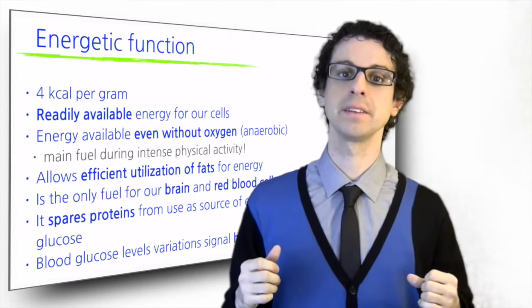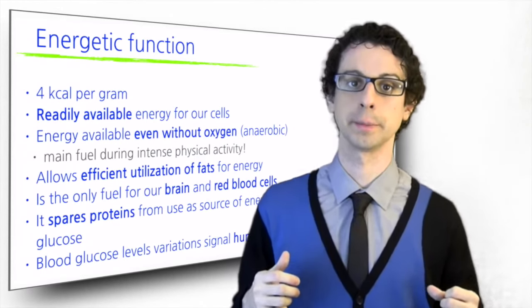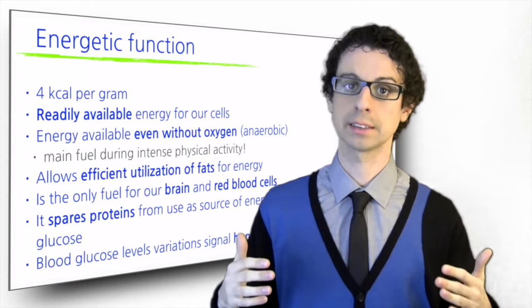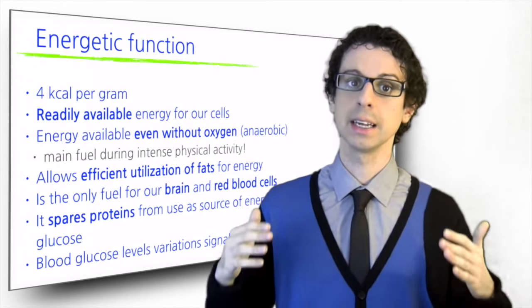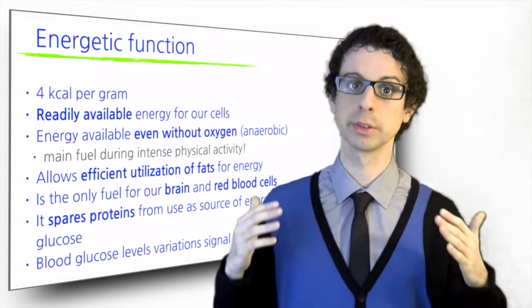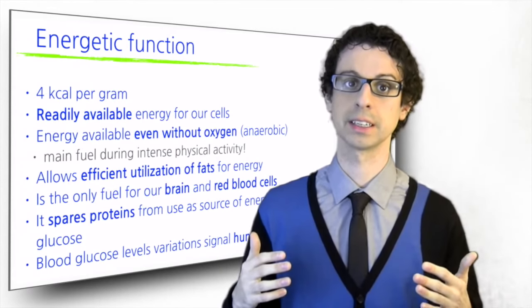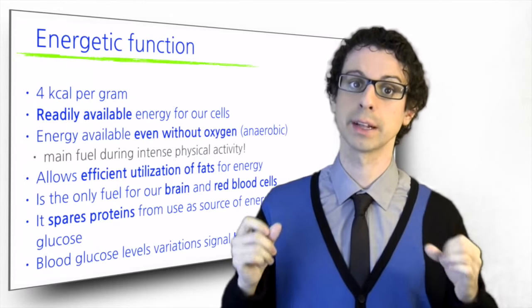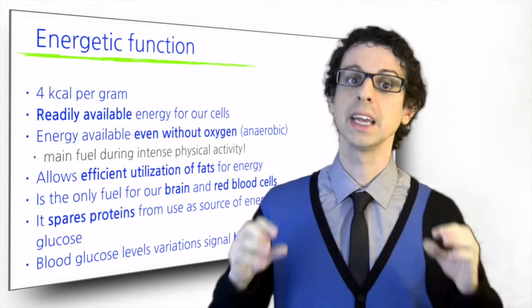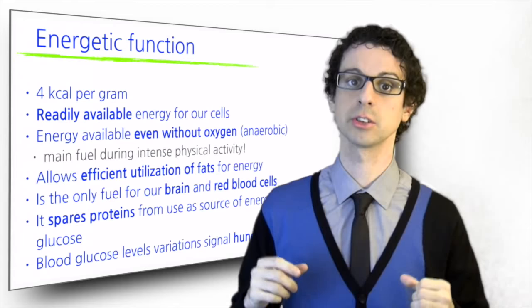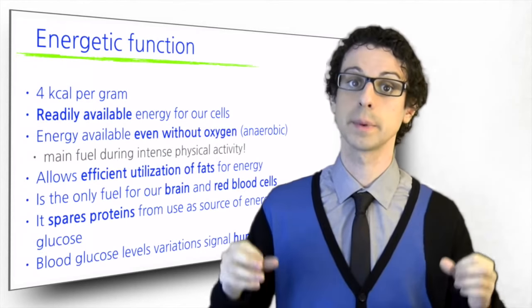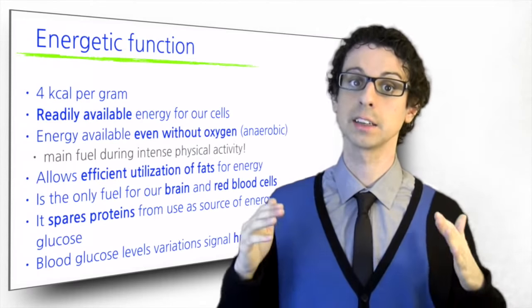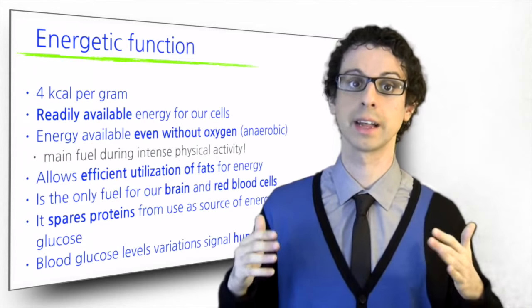So to recap, these are the main functions of glucose in our body. It provides readily available energy for our body at rest and during light activity. It is the only source of energy during intense anaerobic physical activity. It provides energy for our brain, nervous system and red blood cells at all times. It allows an efficient utilization of fats for energy. It spares proteins from use as source of energy and blood glucose. And its blood variations signal hunger and satiety.